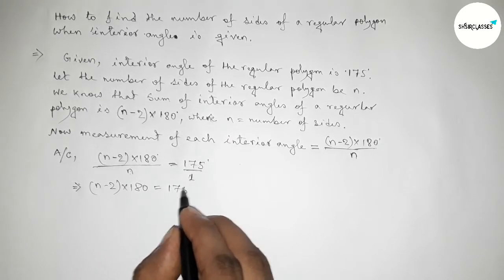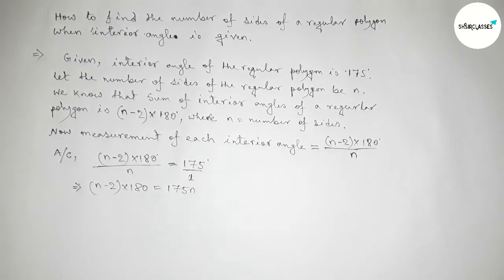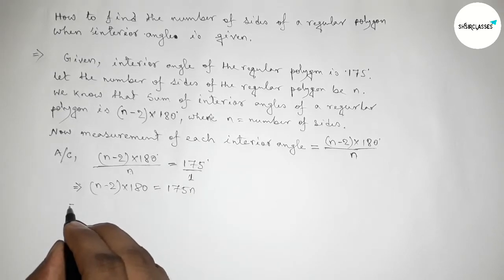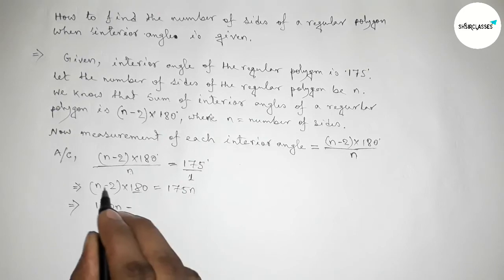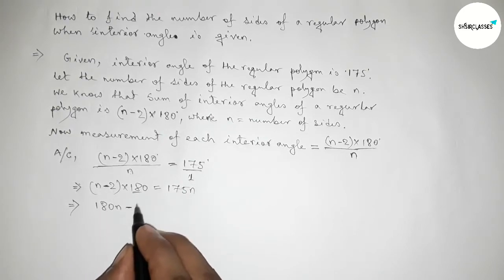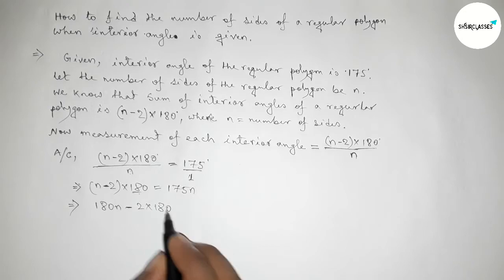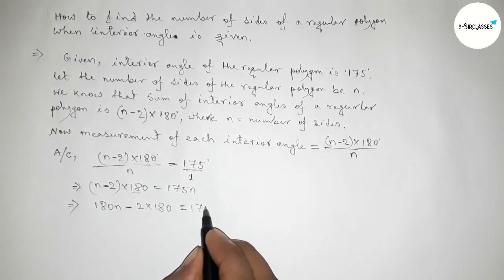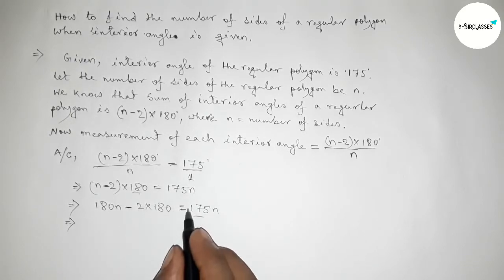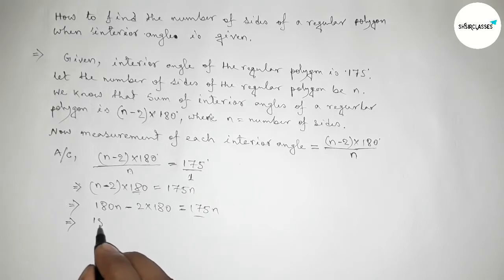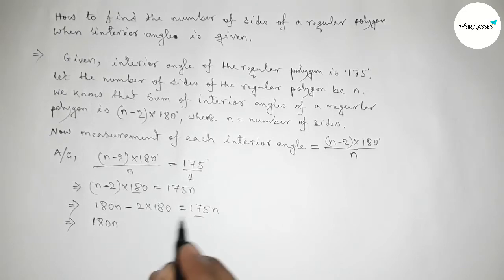Cross multiplying with 1, so (n - 2) × 180 multiplying by 1 gives the same number, and cross multiplying by 175 degrees × n. Now solving this, we get 180n minus 360 equals 175n.